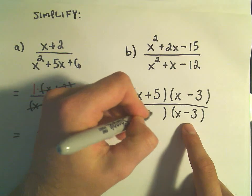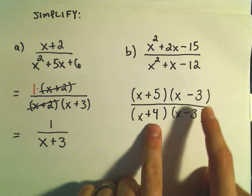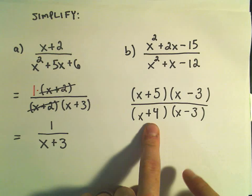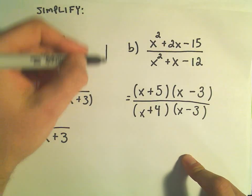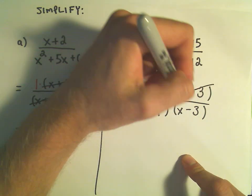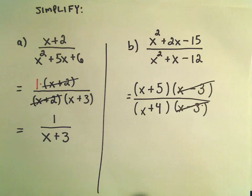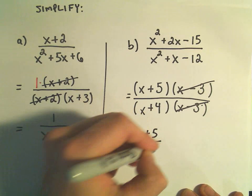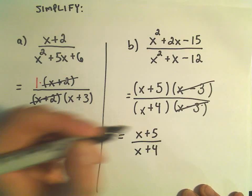Then I think we would need a positive 4 so that when we multiply we get negative 12. And when we add them we do get positive 1. So at this point we can just cancel out the x minus 3 and the x minus 3, and we're left simply with x plus 5 over x plus 4.